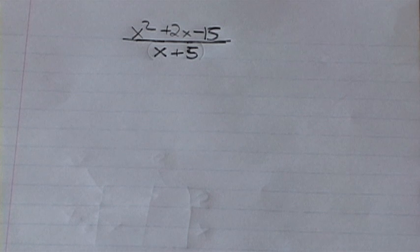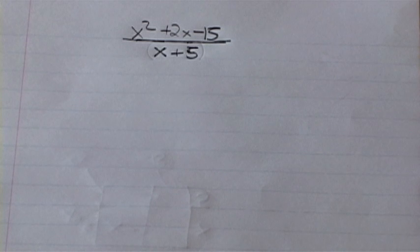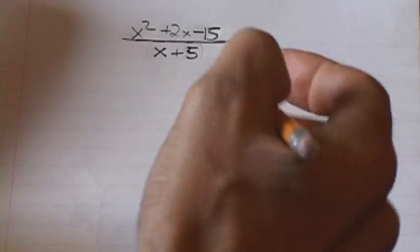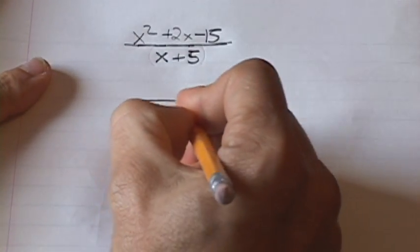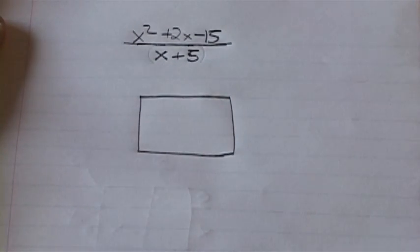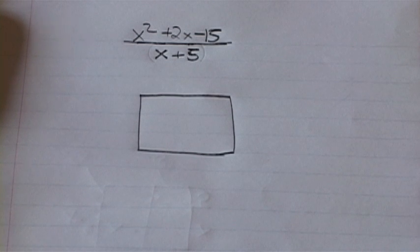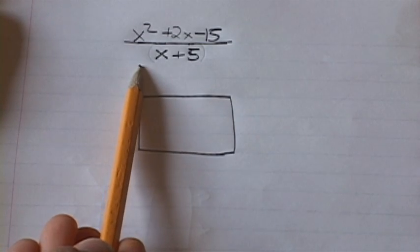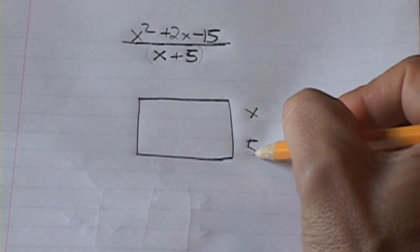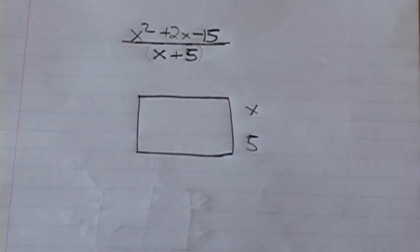Now we're going to do the same problem but we're going to divide — we're going to do the opposite. We know the answer is going to be x minus 3 because we just did the multiplication problem, but we're going to assume we don't know the answer and use the box. So we make our little box, and we know that one of the factors is x plus 5, so we write that along the side: x and the 5.